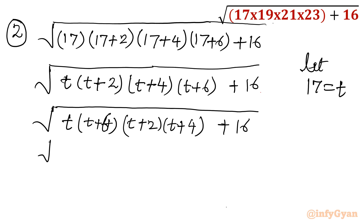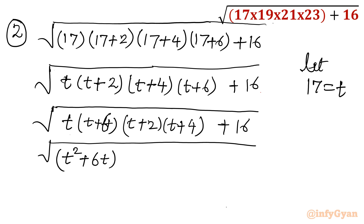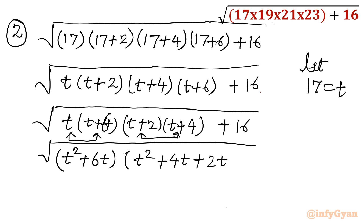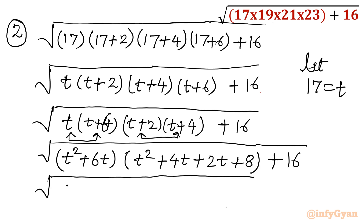Now let's take the product. Let t equal 17. The first pair (t)(t plus 2) gives t squared plus 2t, and the second pair (t plus 4)(t plus 6) gives t squared plus 6t plus 24. Then multiplying: t squared times t squared gives t to the power 4; t times 4 is 4t; 2 times t is 2t; 2 times 4 is 8; combined as t squared plus 6t.